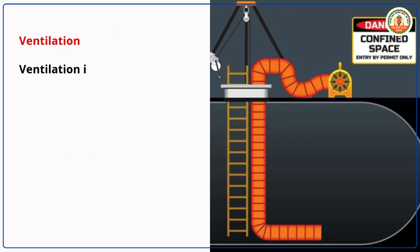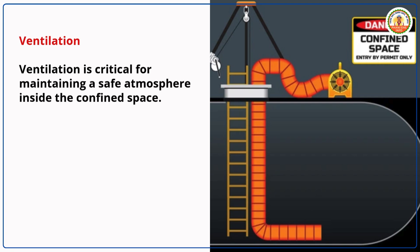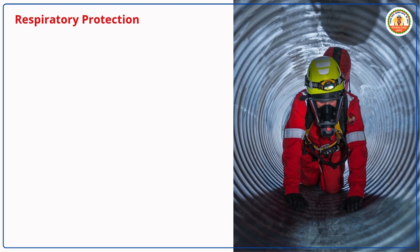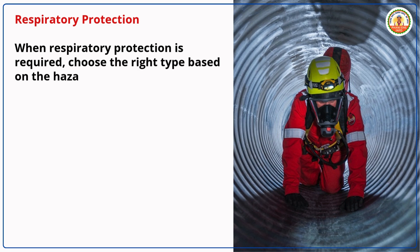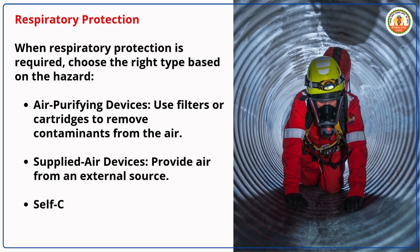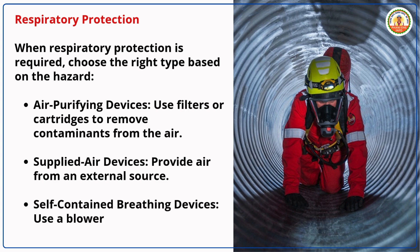Ventilation is critical for maintaining a safe atmosphere inside the confined space. Use blowers and fans that are appropriately sized, explosion-proof, and properly positioned to ensure effective airflow. When respiratory protection is required, choose the right type based on the hazard: air-purifying devices use filters or cartridges to remove contaminants; supplied-air devices provide air from an external source; and self-contained breathing devices use a blower to force air through purifying elements.